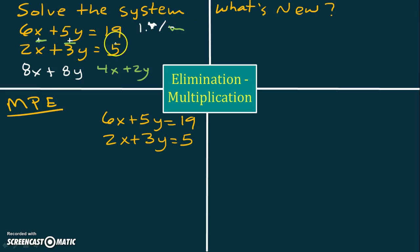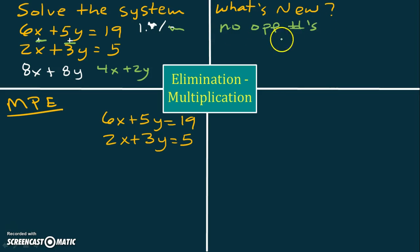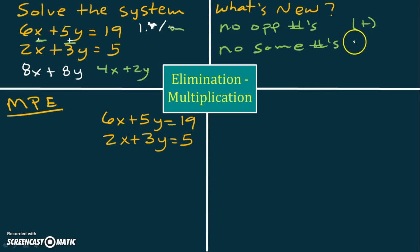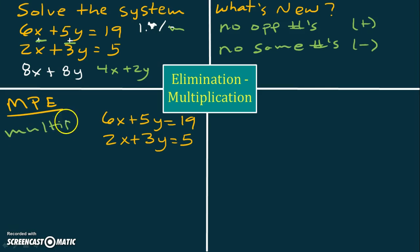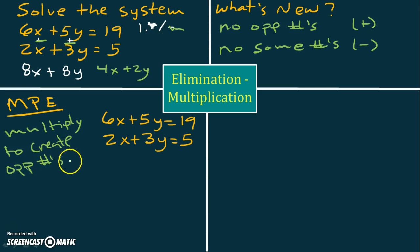So what's new about these systems is there are no opposites given to us — no opposite numbers in front of one of the variables, no opposite coefficients, and there's no same numbers given to us. So we cannot add right away or subtract right away. What we're going to do today is use the multiplication property of equality and multiply to create the opposite number or the same number.